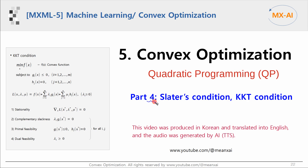This is the fourth and final part of the convex optimization series. In this video, we will look at the Slater's condition and the KKT condition. Rather than mathematical proof, let's try to understand them intuitively through simple examples.